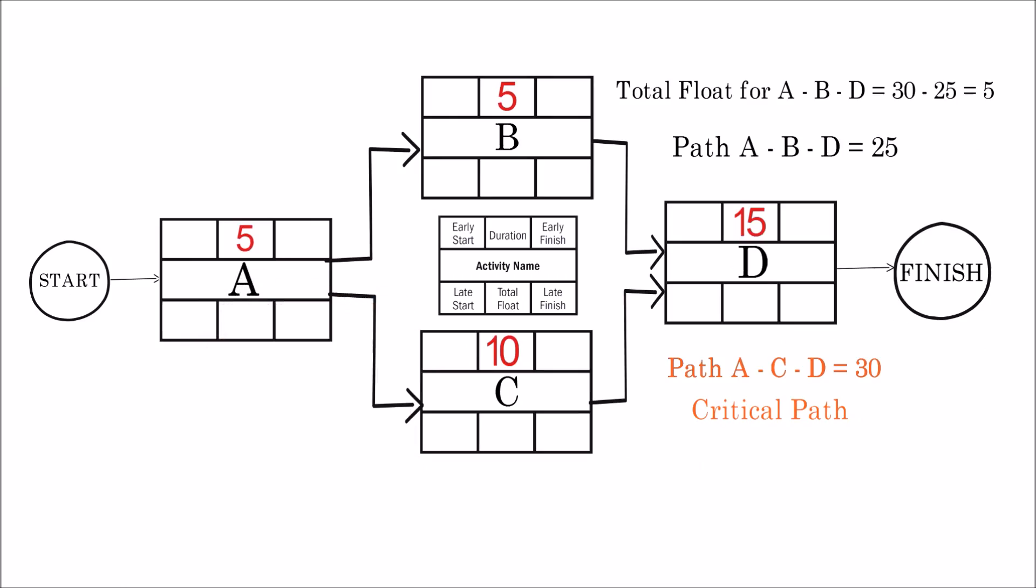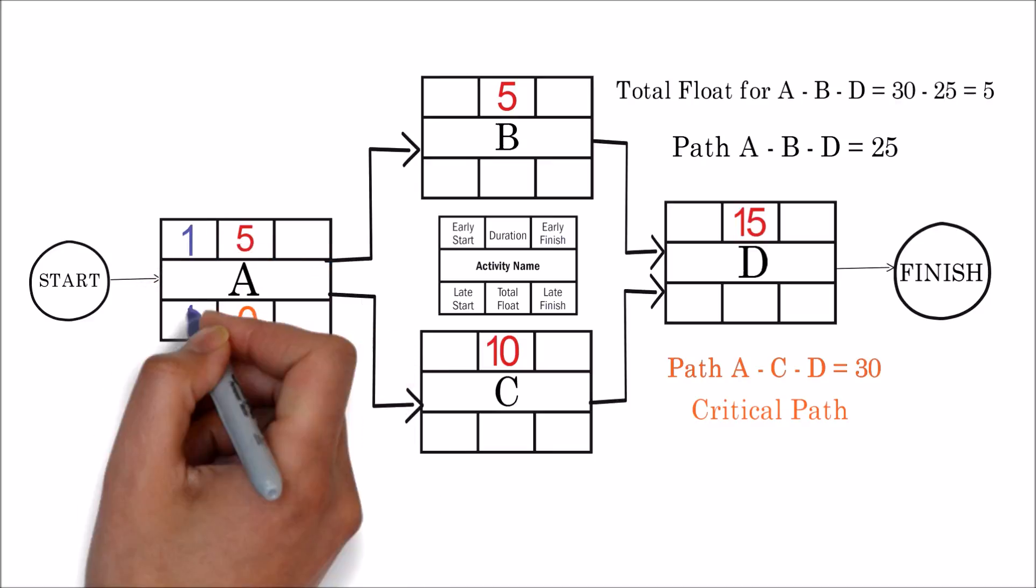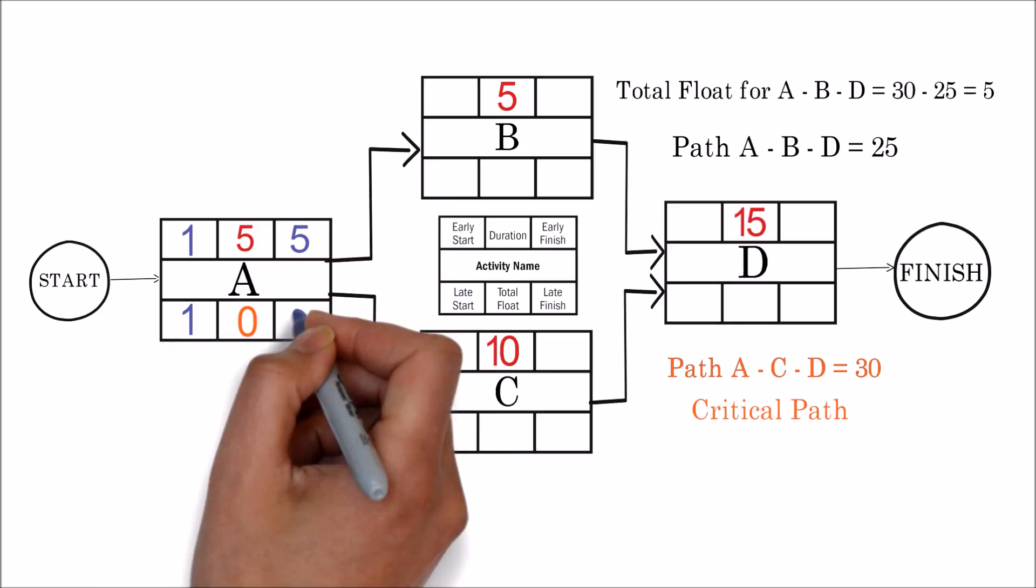Now let's start from the leftmost activity A to calculate early start and finish dates. Since the activity is part of the critical path, there is no float available for the activity. Hence the early and late start day is 1, and the late start and end date is 5 days.